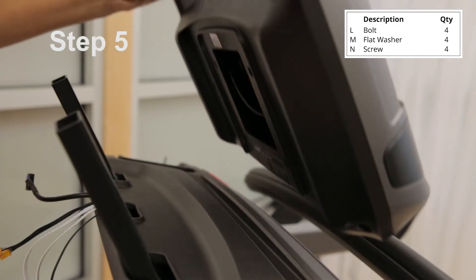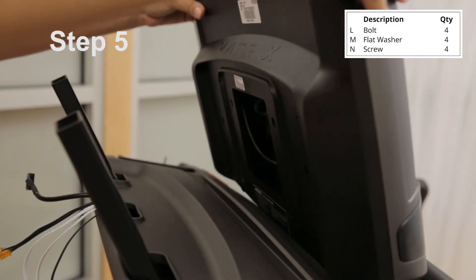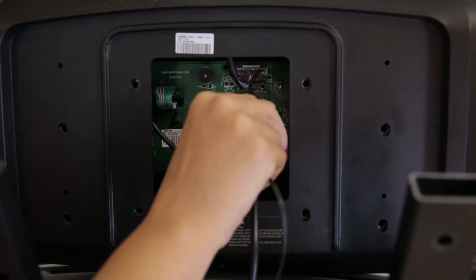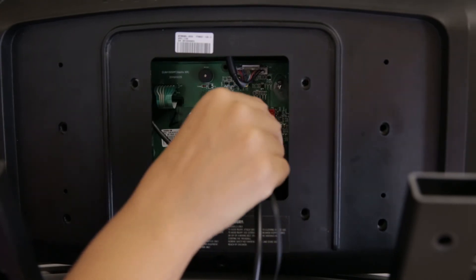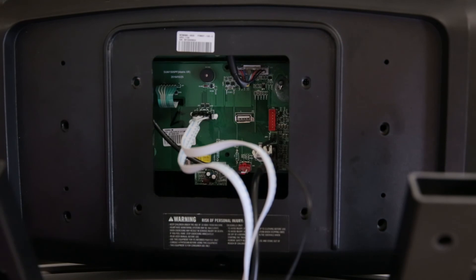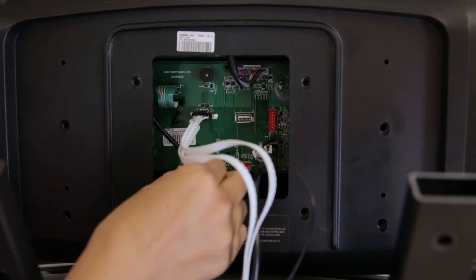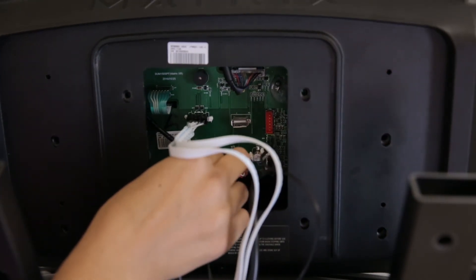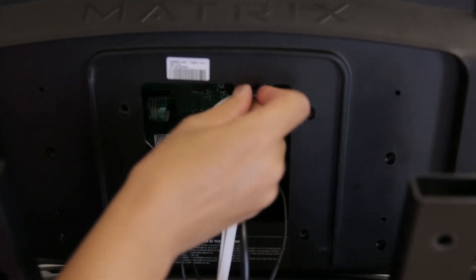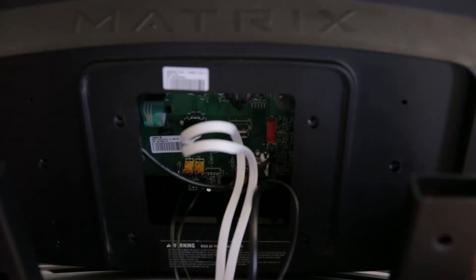Place the console onto the console base. Gently pull the cables and connect them to the console control board. Gently tuck the cables into the console and set the console in place. Be careful not to pinch any wires.